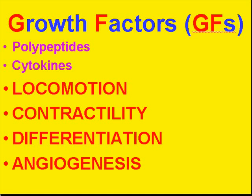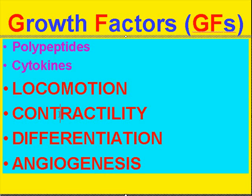That's going to lead us into our next big topic of growth factors, the GFs. I'm going to give you the introduction, and then we'll go through all of them in the next group. There are a lot of different growth factors — they all end with the letters GF — and they do a lot of things. As you might guess, they cause cells to grow and multiply; they are mitogenic. But in general, they are involved in locomotion of cells, contractility of cells, differentiation of cells, and in healing and regeneration — especially angiogenesis, the growth of new blood vessels, organizing inflammation, and granulation tissue. They're all polypeptides, and you can also call them cytokines.